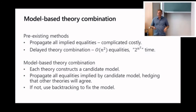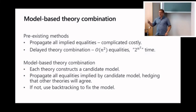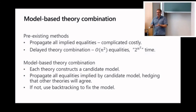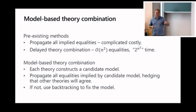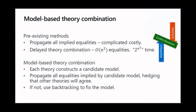The model-based idea is that each theory works independently and builds a model with respect to that theory. The arithmetic theory assigns integers to variables; the uninterpreted function theory creates lookup tables for functions. Each decides in isolation what's equal. If the arithmetic theory decides two variables are equal, it creates an equality literal and introduces it into the search space. If the other theory doesn't agree with that equality literal, it will backtrack. This is a lazy way of implementing delayed theory combination, and a first instance of exploiting searching for a model while dually creating a proof in SMT.